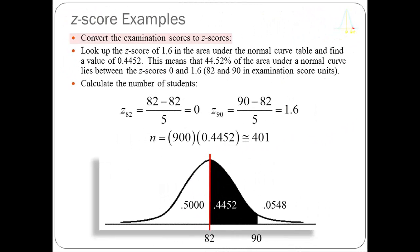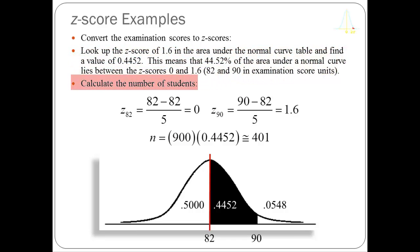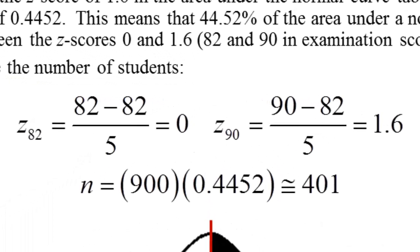Here's what we're going to do. We're going to convert the examination score to a Z-score, look up the Z-scores in a normal table, find the associated area, and then determine the probability of having students who scored between 82 and 90. For the first Z-score, 82 minus 82 divided by 5 is equal to 0. That is, when we have a score right at the mean, which is a boundary in this problem, the Z-score has to be equal to 0.